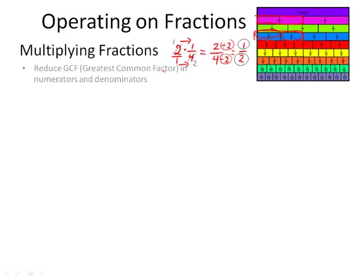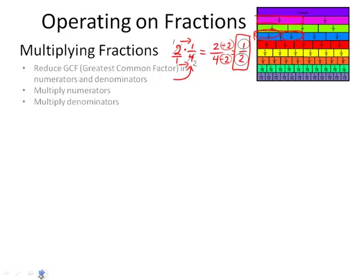The easiest thing is to first reduce your greatest common factor in your numerator and denominator. Next, you want to multiply your numerators, and then you want to multiply your denominators, leaving you with the answer.